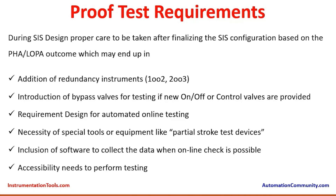During system design, proper care is to be taken after finalizing the Safety Instrumented System configuration based on the PHA (Process Hazard Analysis) and LOPA (Layer of Protection Analysis) outcome. Based on these studies there could be some additional requirements on the SIS, such as: addition of redundancy instruments like 1oo2 or 2oo3 voting; introduction of bypass valves for testing if new on/off or control valves are provided; and a requirement to design for automated online testing, where isolation valves are closed provided there is enough bypass arrangement for the process to continue operations.